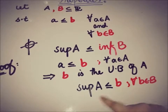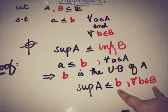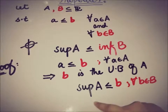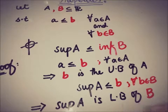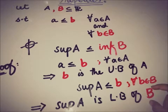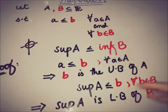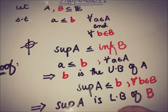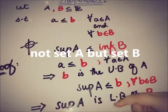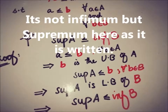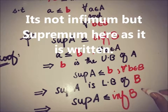Since sup(A) is less than or equal to every element of B, we can apply the definition of infimum: sup(A) is a lower bound of B. This implies that B has a lower bound, and therefore B must have an infimum. By definition, the infimum is greater than or equal to every possible lower bound, so inf(B) ≥ sup(A).